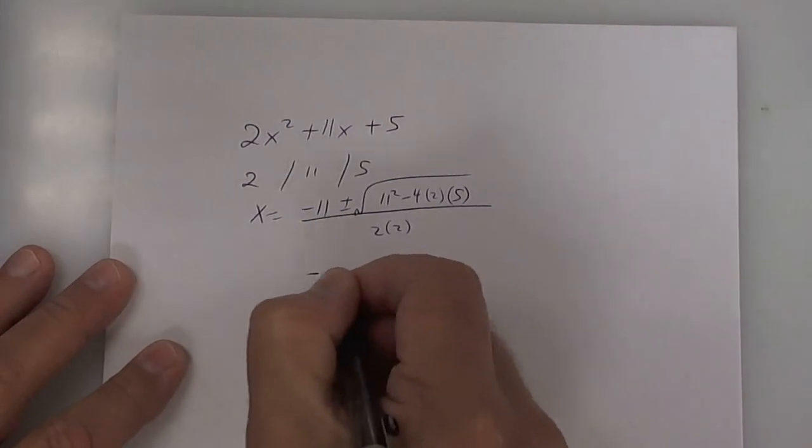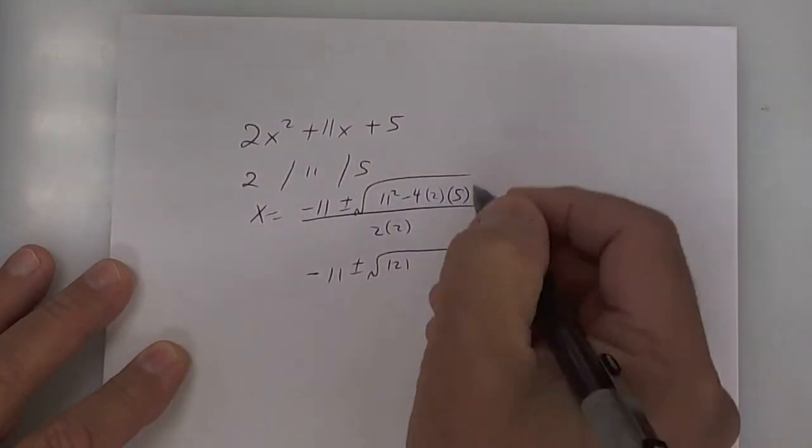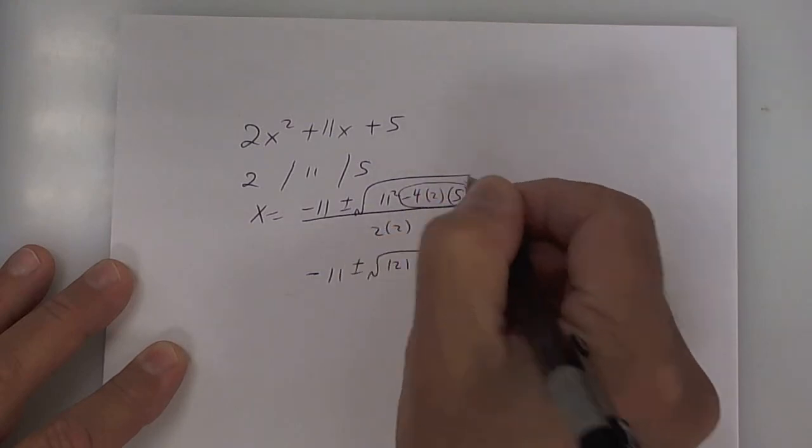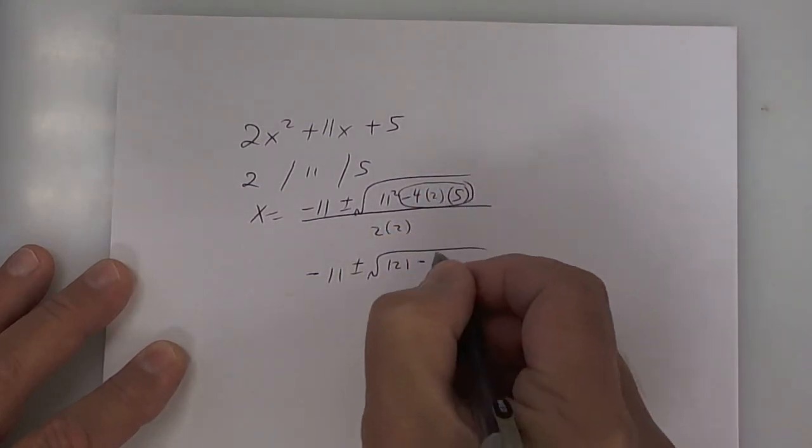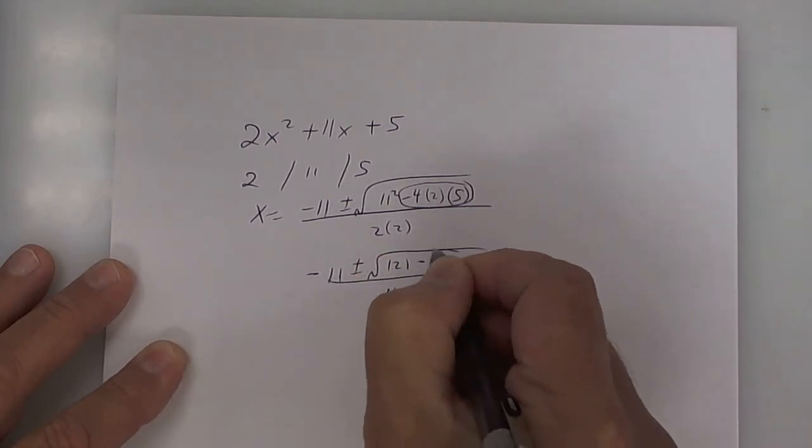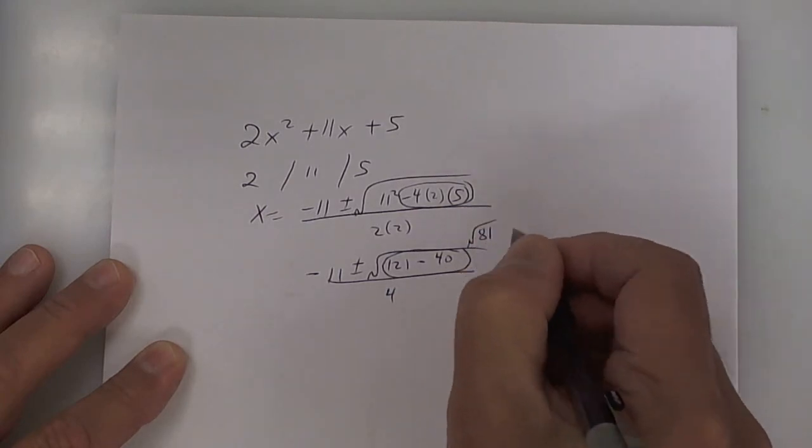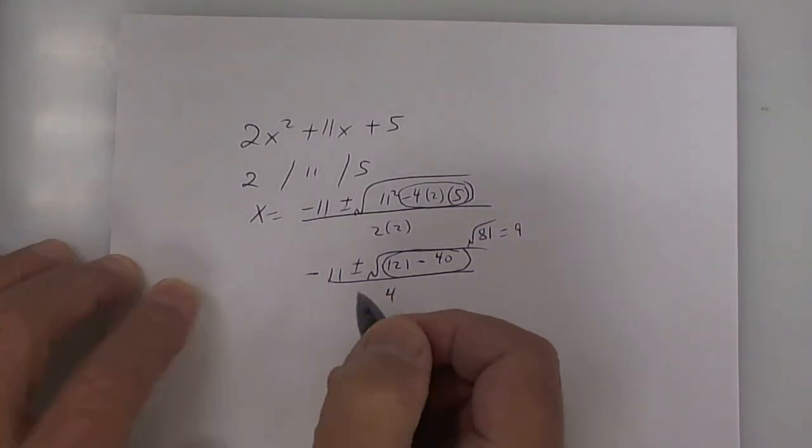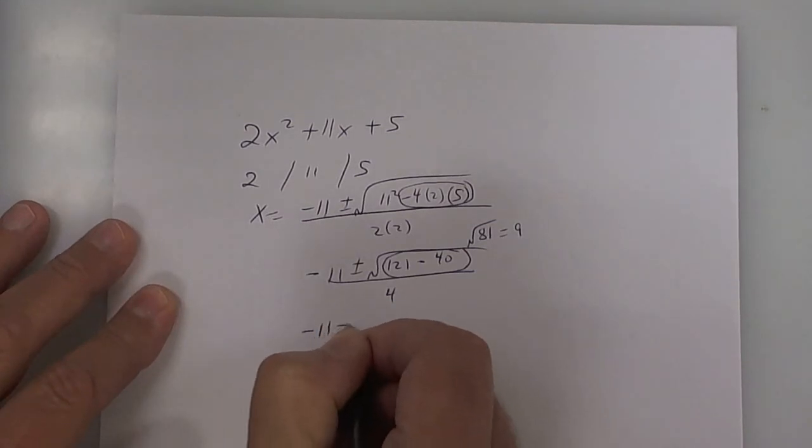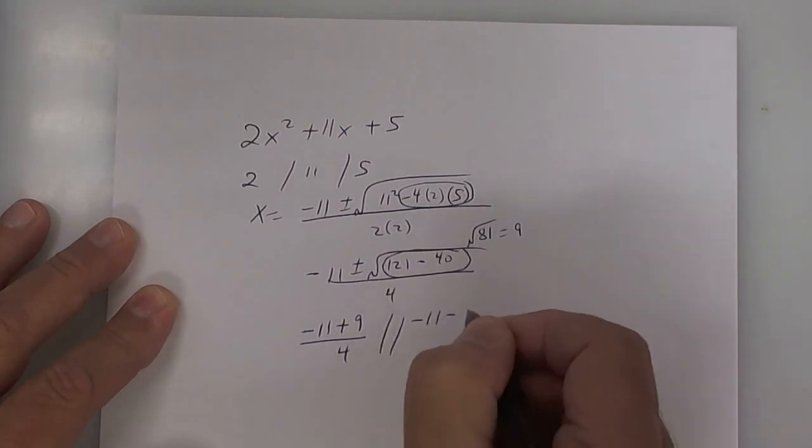You're going to get a negative 11 plus or minus the square root of 121. This is only one negative, so it's going to be a minus. That's 8 times 5 is 40, so put 40. And then 2 times 2 is 4. Now this right here is 81. So the square root of 81 is equal to 9. So it's going to be negative 11 plus 9 divided by 4, and negative 11 minus 9 divided by 4.